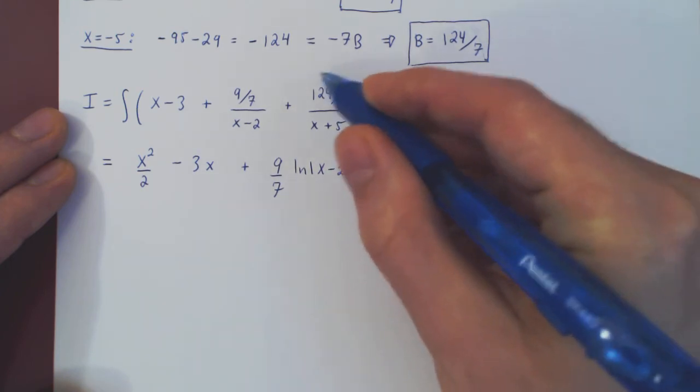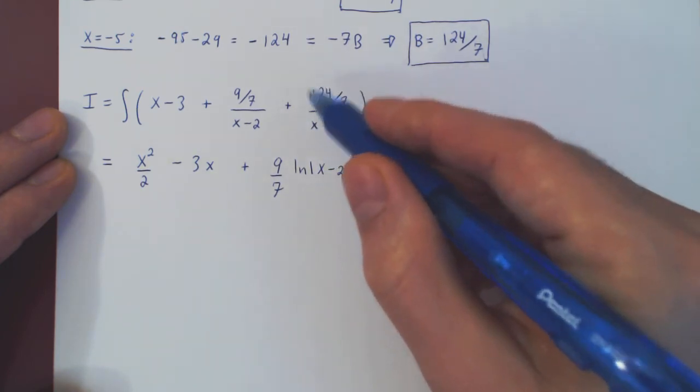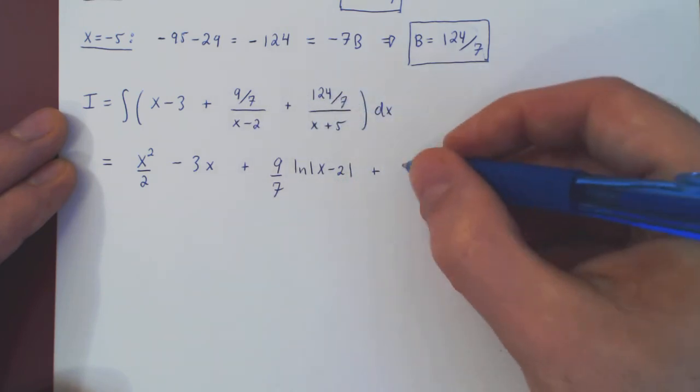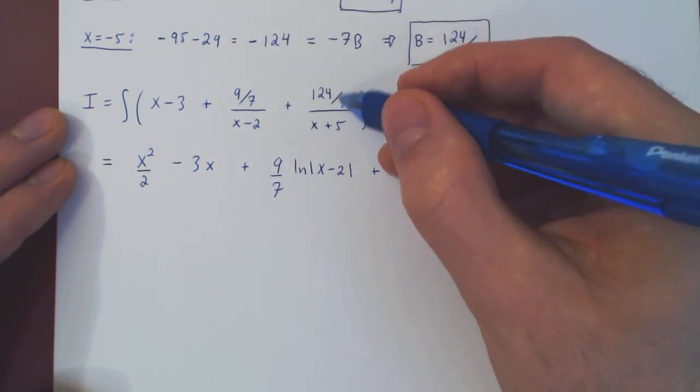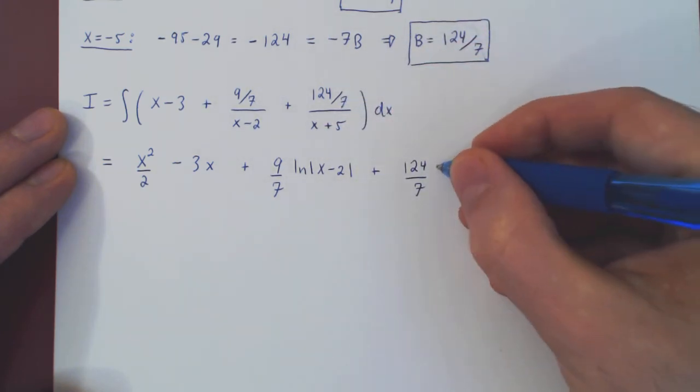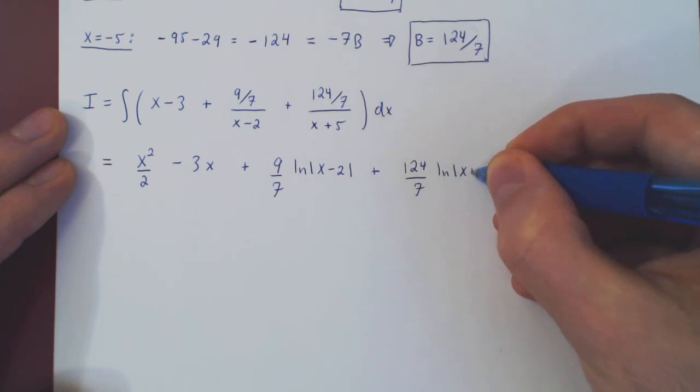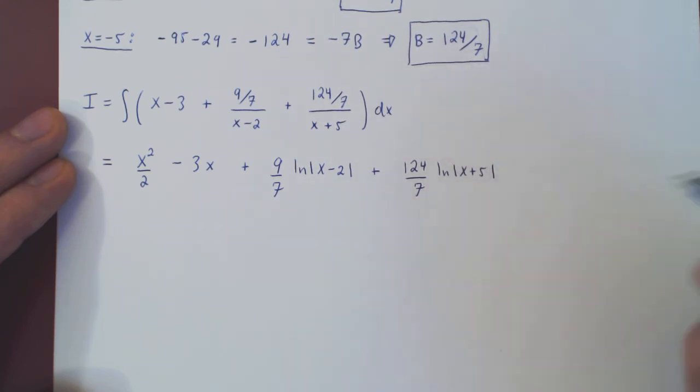Plus, the same goes for the last rational function, 124 over 7 is a constant multiple, which will leave you with the integral of 1 over x plus 5, which again is the ln in absolute value of x plus 5. And finally, we add plus C.